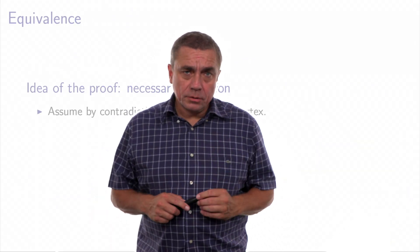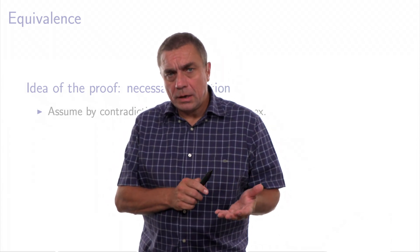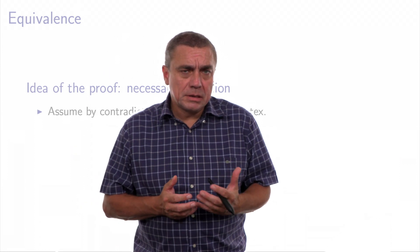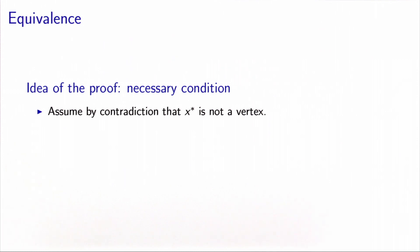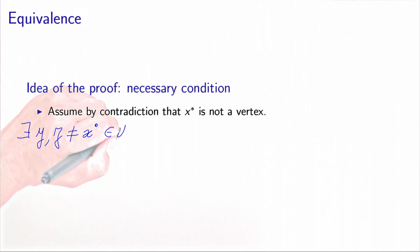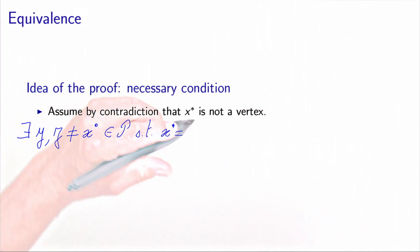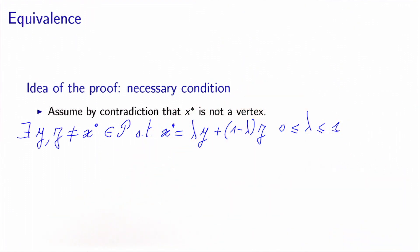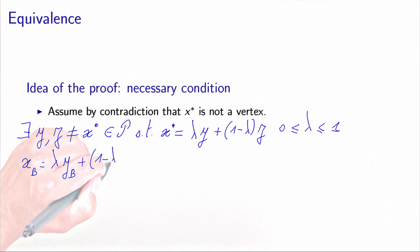In the other direction — the necessary condition — we assume that x* is a feasible basic solution and we have to prove that it is also a vertex. Again we work by contradiction. The proof is basically a calculation. Let's assume by contradiction that x* is not a vertex, meaning there exist two points y and z, different from x* and belonging to the polyhedron, such that x* is a convex combination of y and z. Because we have a feasible basic solution, we can decompose this equation into basic variables and non-basic variables, writing x_B = λy_B + (1−λ)z_B.